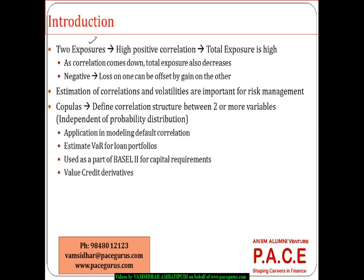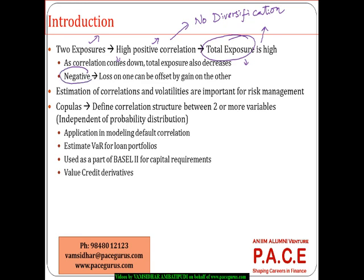Whenever we look at two exposures, I just have to see what is the kind of correlation — the kind of interdependency existing between these two variables. If it is very high positive, there is no diversification effect because if one leads to a loss, there is a good chance the other also triggers a loss, making the total exposure phenomenally higher. But if correlation comes down, the exposure also comes down. And the moment correlation goes negative, the loss on one exposure can be offset through the gain on the other.